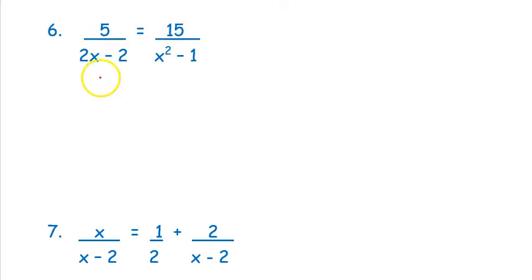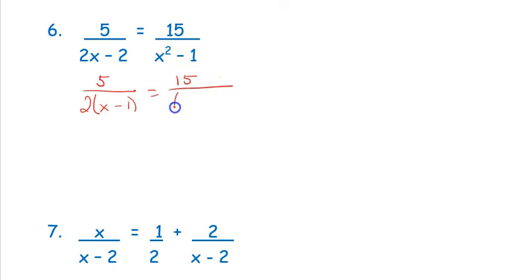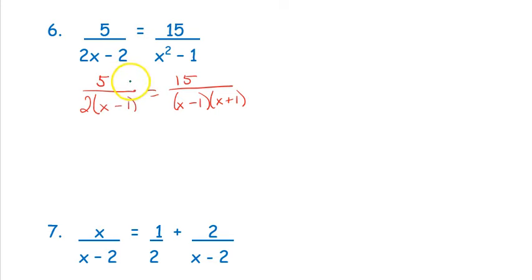With example six, the bottoms have pluses and minuses so you want to factor. I have 5, and I factor out a GCF of 2 giving (x − 1). On the right side, x² − 1 is a difference of perfect squares, giving (x − 1)(x + 1). I check whether 5 and 2 reduce — they don't — so I keep the 2 as part of the denominator. I need to multiply by 2(x − 1)(x + 1) so everything cancels.